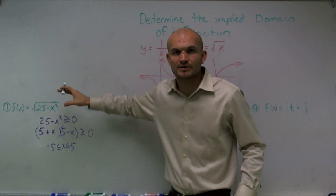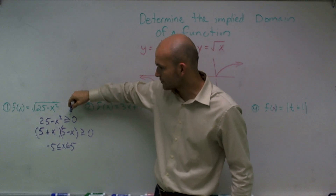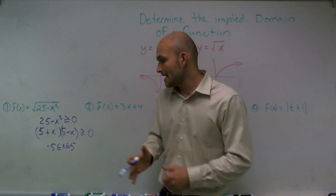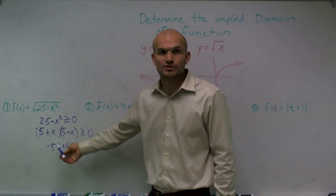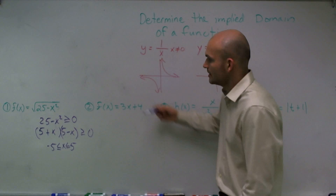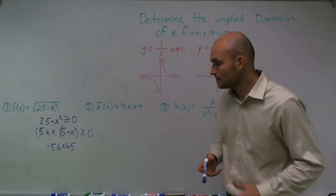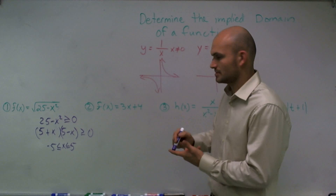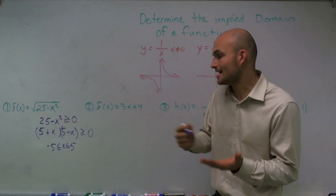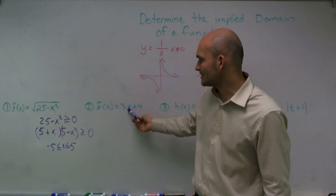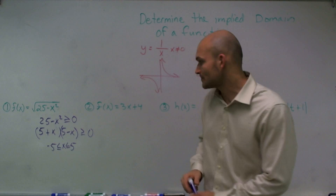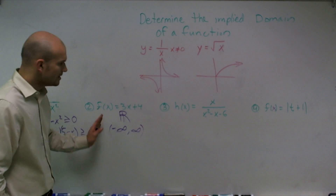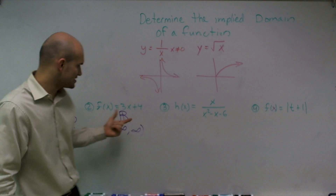So whenever you have any kind of problem with a root, make sure you set it greater than or equal to 0, solve for it, use your test points to see which ones are going to be true and which ones will be false, then exclude the false ones and write your domain for all the numbers that are true. If I look at f of x equals 3x plus 4, if you just think about what numbers I can plug in for x — negative 1000, negative 2, 0, 4, one half, 99 — it doesn't matter, I'm always going to multiply by 3 and add 4 and get a value. So the domain for this function is all real numbers, negative infinity to infinity.